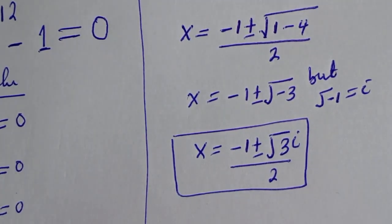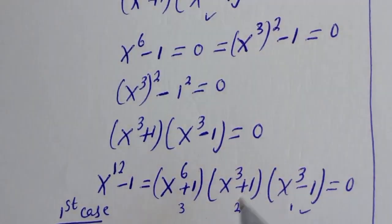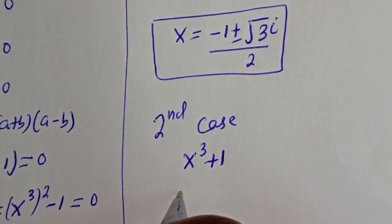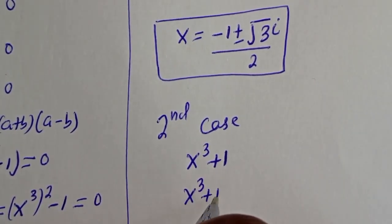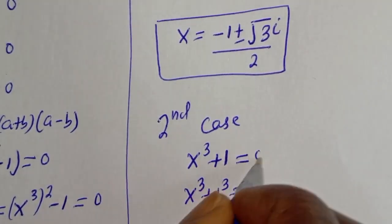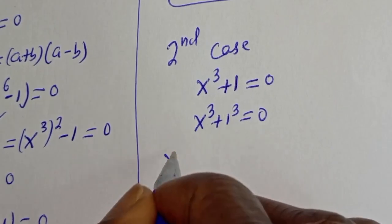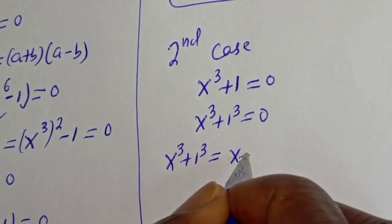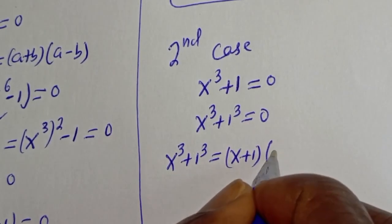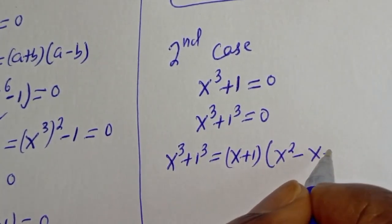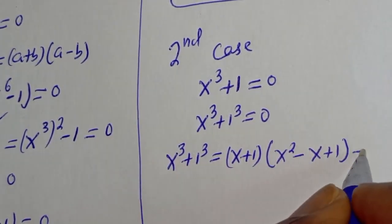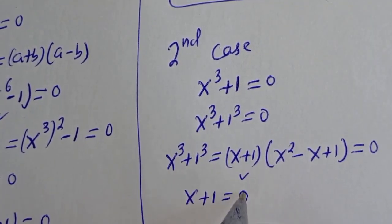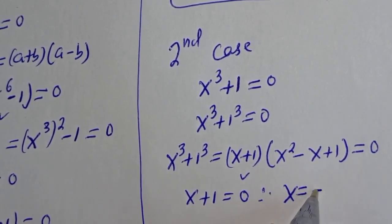Now let us consider Case 2: s raised to power 3 plus 1 is equal to 0. This can be written as s cubed plus 1 cubed equal to 0, which factors as s plus 1, bracket, s squared minus s plus 1, equal to 0. From here, s plus 1 equals 0, therefore s equals negative 1.